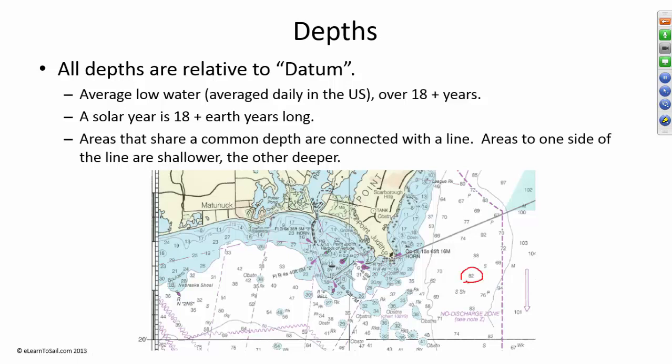So here we have a depth of 82 feet. If this was an international chart, that datum would be about 79 feet. We can see here is 88 feet. On the other side over here, we have 103 feet. Here we have 101 feet. Here we have 76, 83. So I'm going to say this line right here is the 90 foot contour. So areas that share a common depth are connected with a line. Everything to one side of it is shallower. Everything to the other side is deeper.